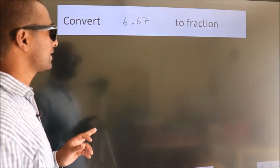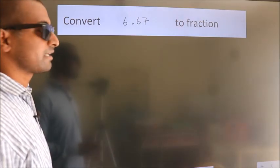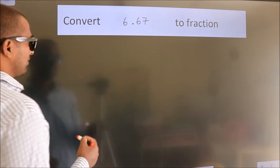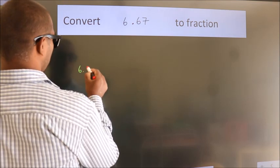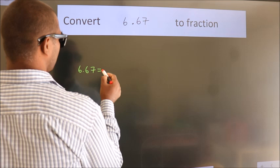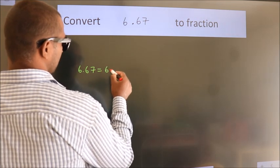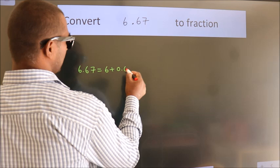Convert 6.67 to fraction. How do we convert? Given is 6.67. First we should break this into 6 plus 0.67.